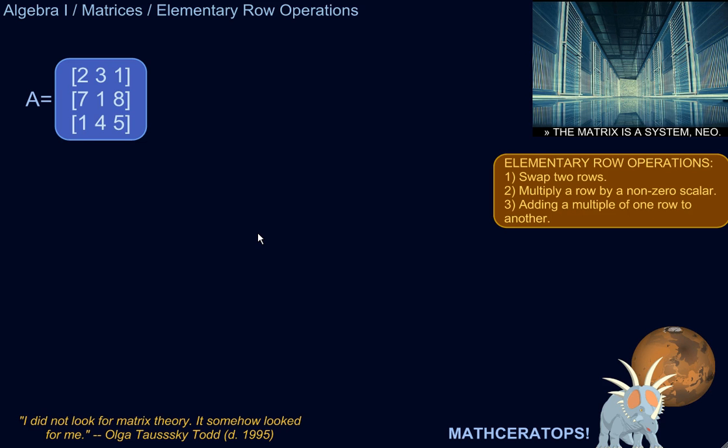So you're going to need to use these elementary row operations when you're using matrices to solve systems of linear equations. You can write the system in matrix form rather than several equations, and then you can do these operations on the matrix until the matrix takes a certain form. And then when it takes that certain form, the answer will be there right before your very eyes. It will be very magical.